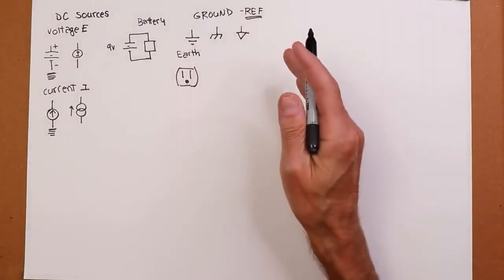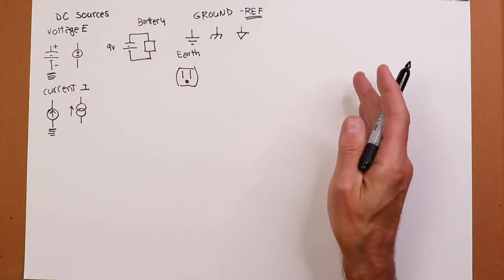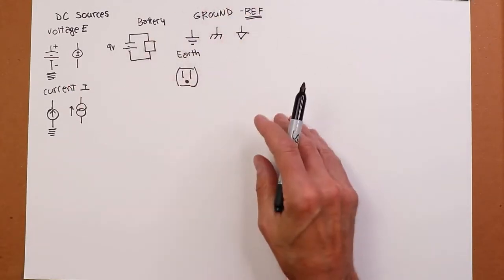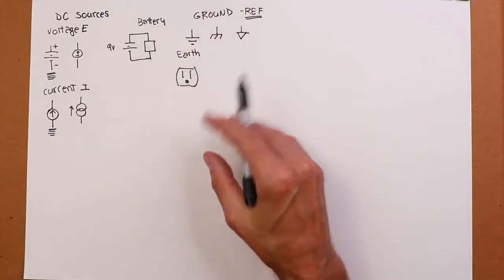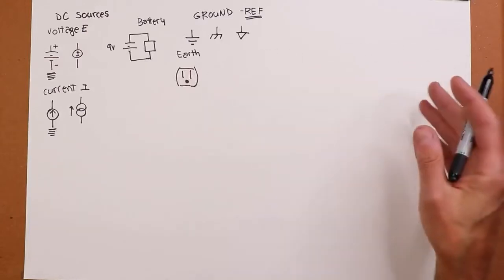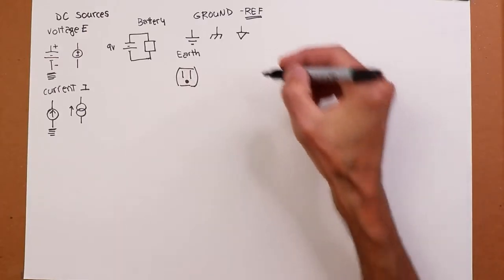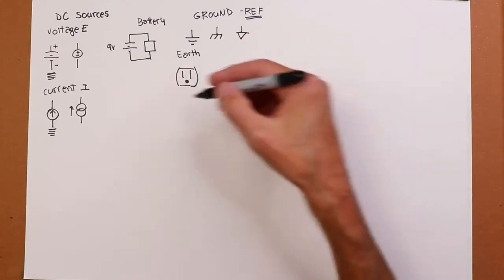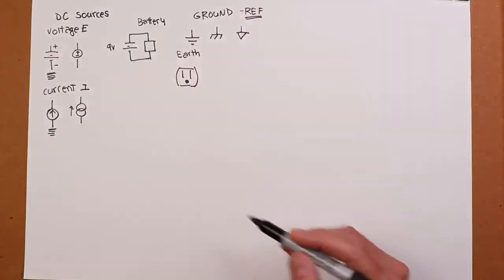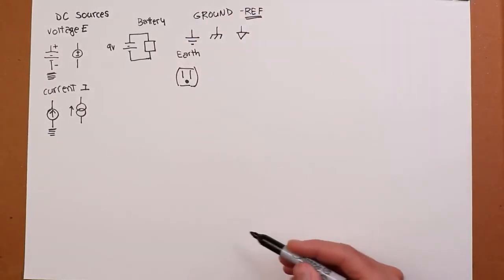This is commonly used where we have to separate the common between, say, a digital system and an analog system. So we have a mixed signal system that's part digital, part analog. And we don't really want all the switching transients that are being caused by the digital system to leak into the analog system because that creates noise. So we need to separate those out. In our work, the vast majority of the time, we're going to be using the earth symbol, even if the circuit doesn't really need to go back to earth.